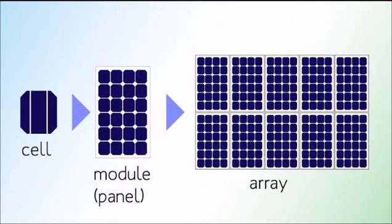The cells are connected in series to form a module or panel. A series of PV panels form an array, the complete power-generating unit.